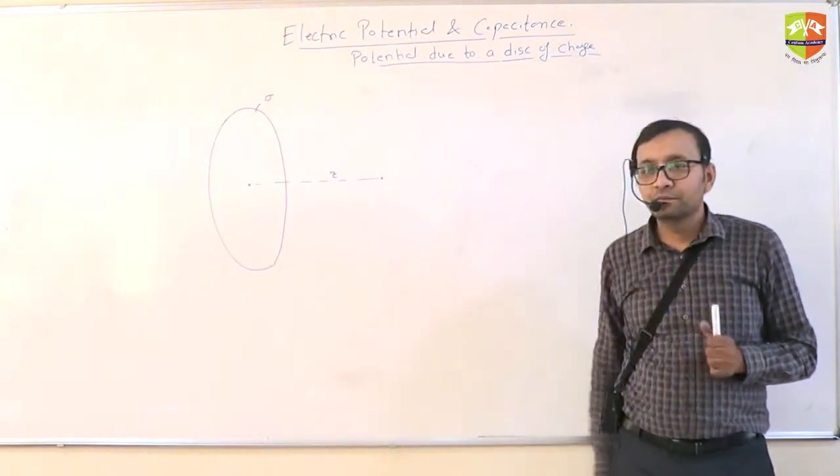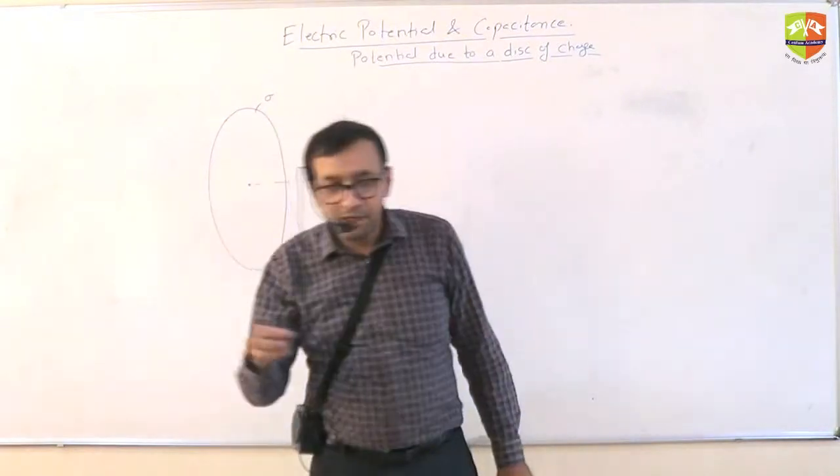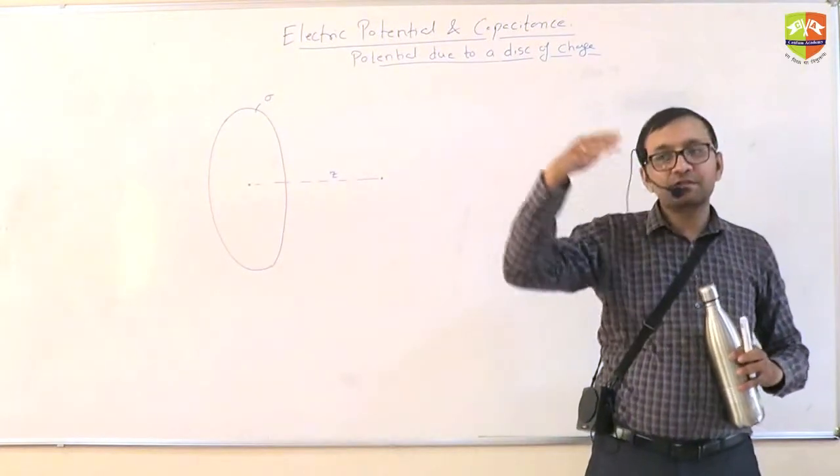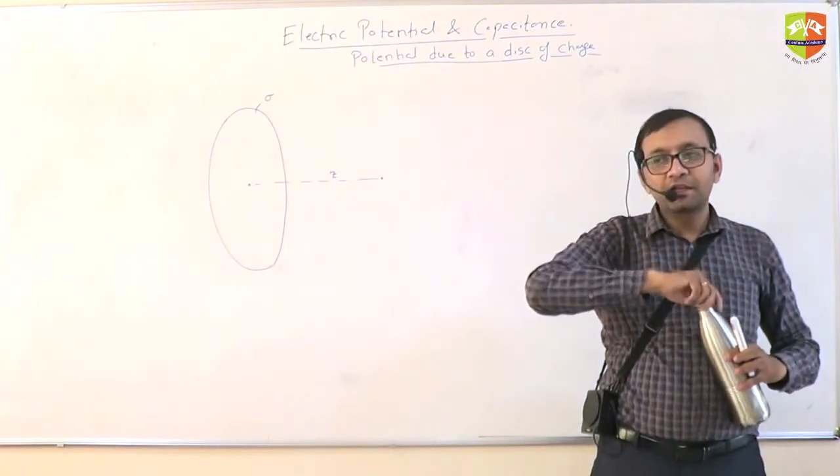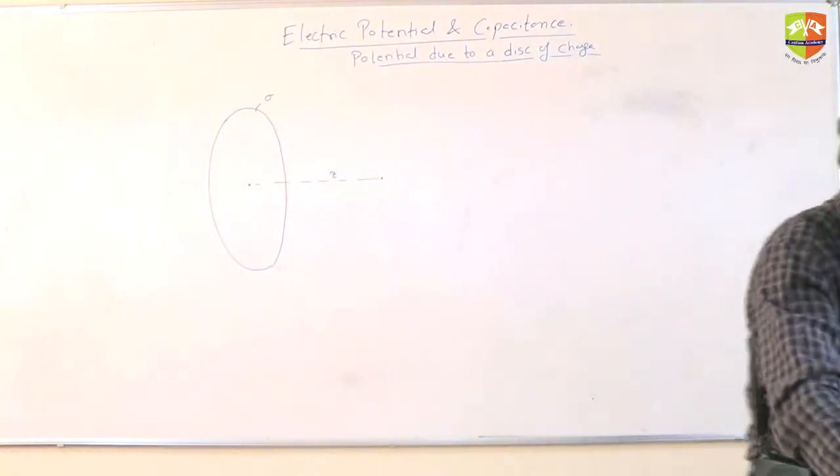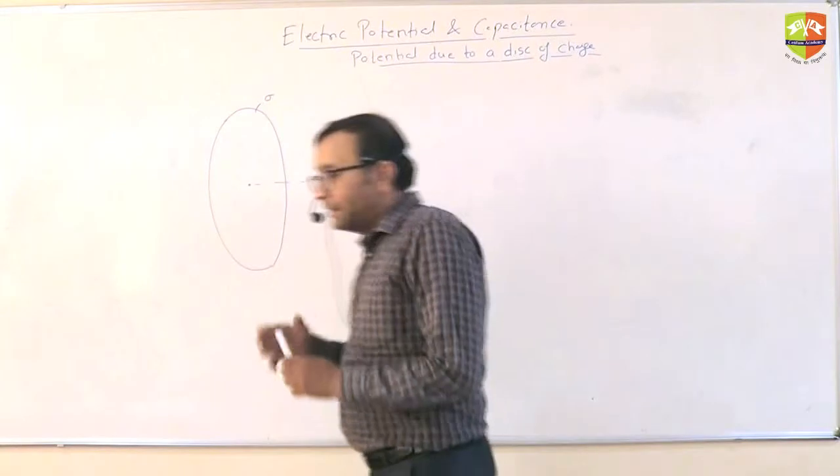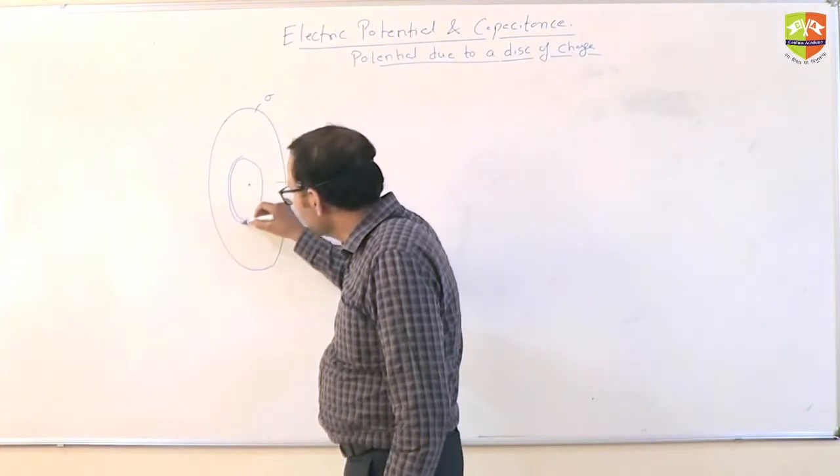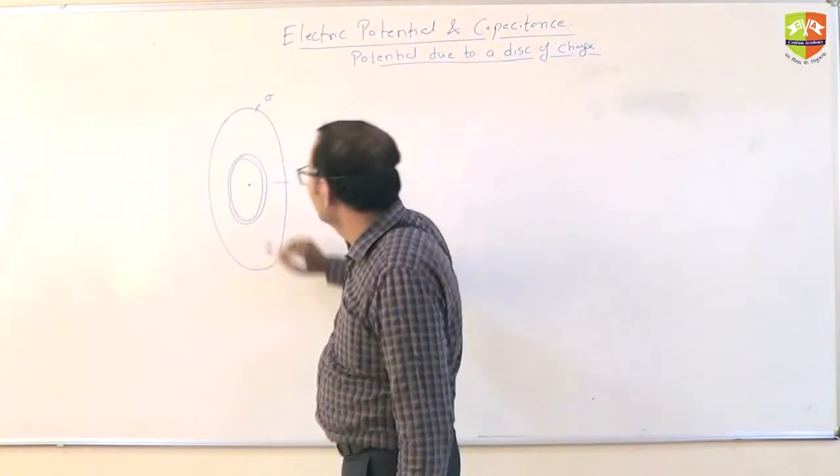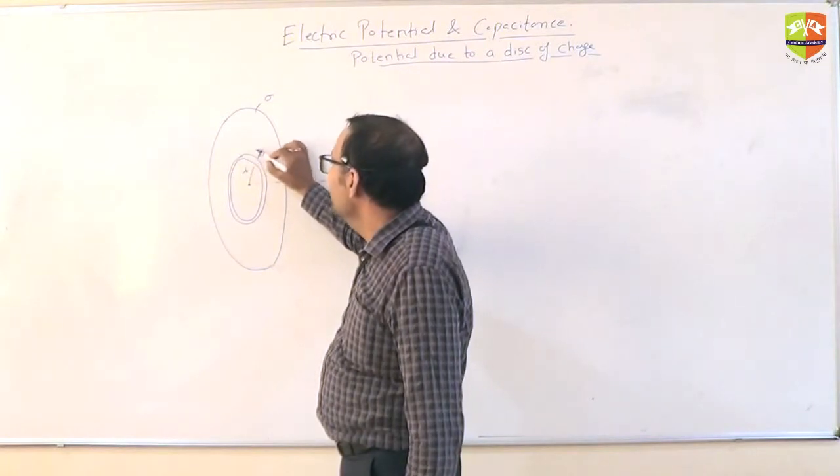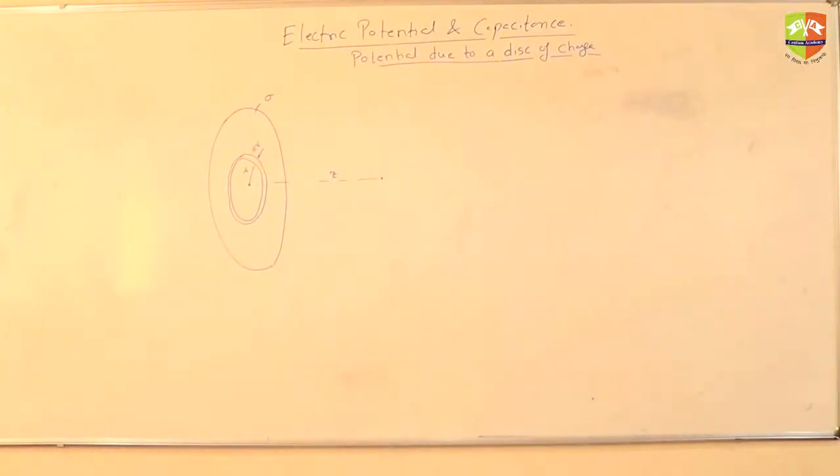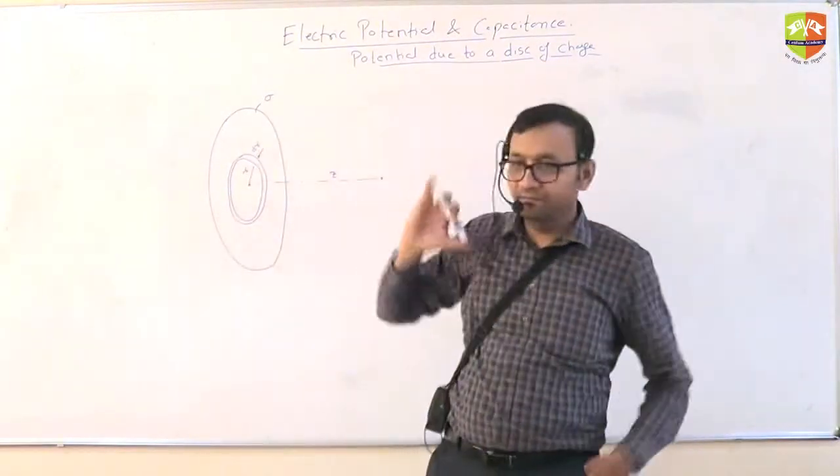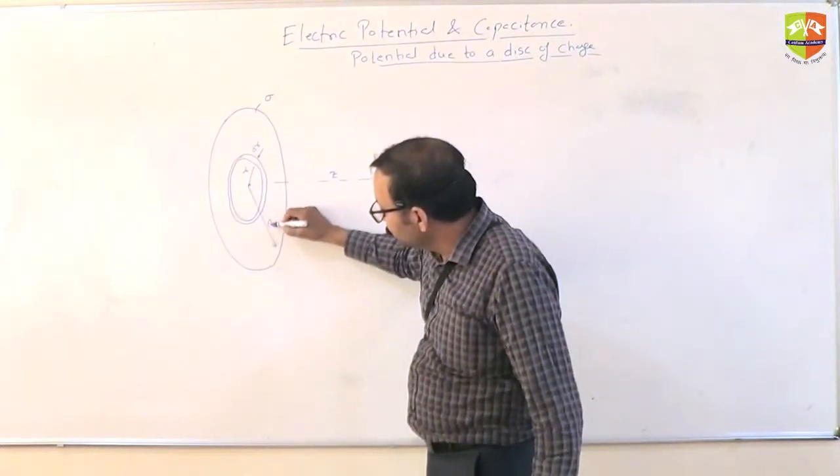Find out potential over here. Treat entire disk as if it is made up of concentric rings. Use a ready-made formula for the ring and then integrate. The radius will increase. Another hint is take a radius r ring whose width is dr. Small r is the radius and dr is the width. Try to do it yourself. Get the potential of this ring and then integrate. Small r from zero to capital R. Capital R is the radius of the bigger disk.